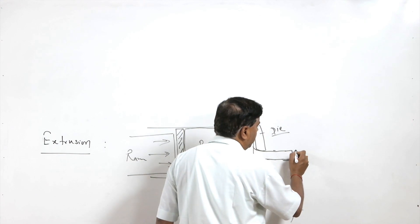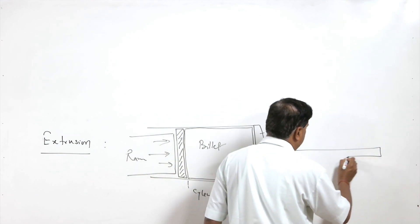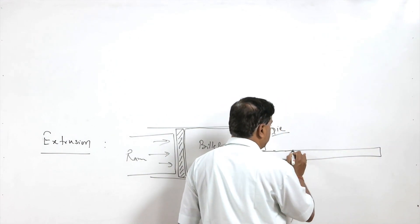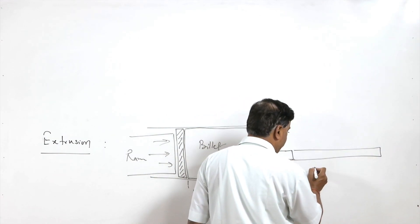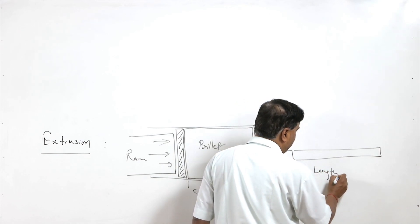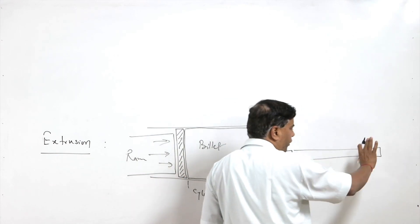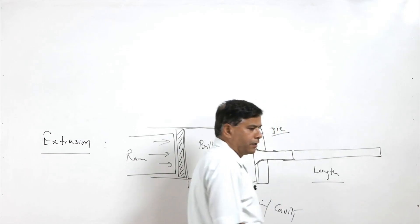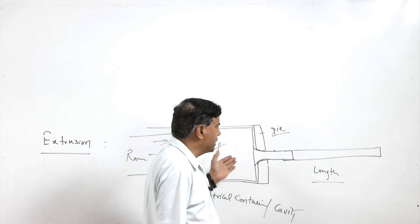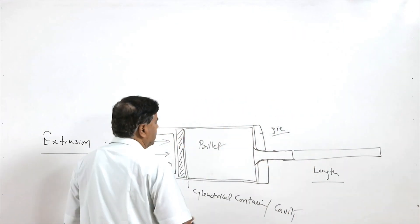We will keep on getting the same cross section along the length, so uniform cross section is achieved throughout the length.